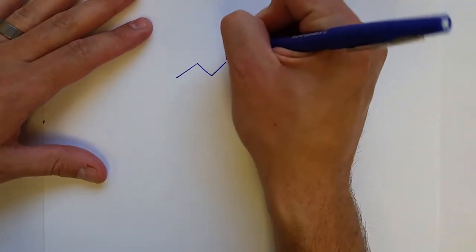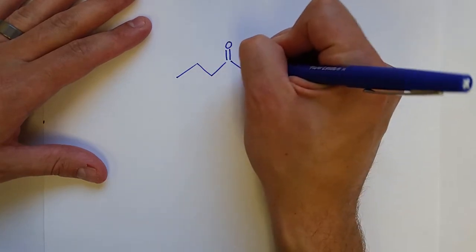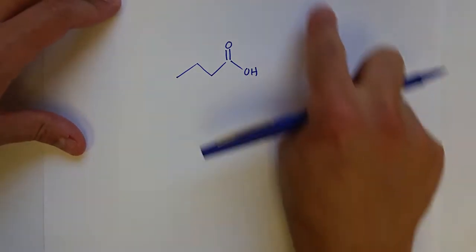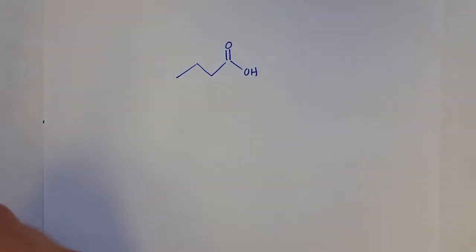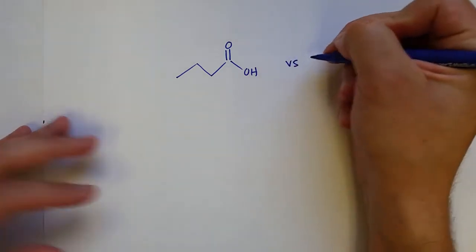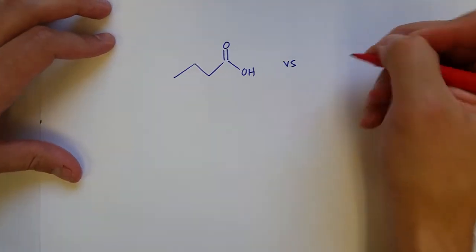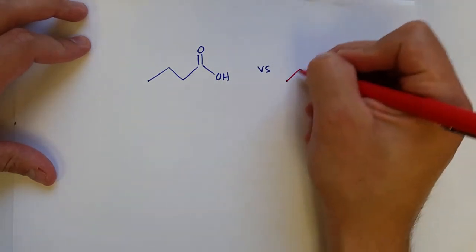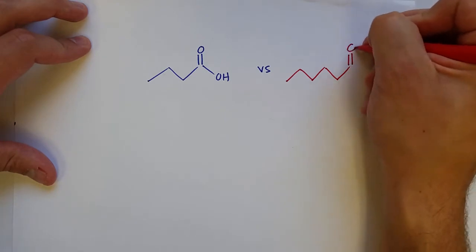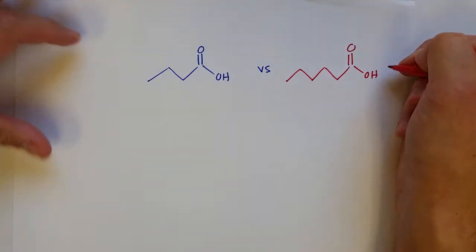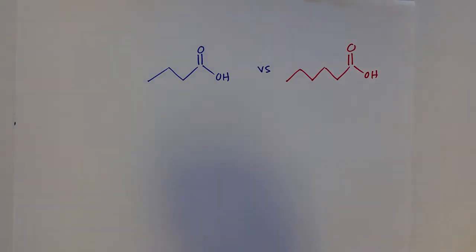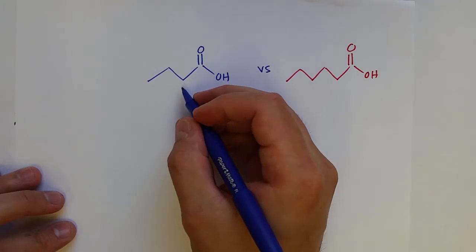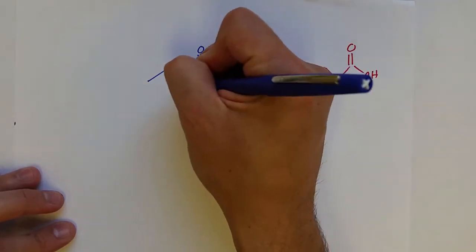Let's talk about other functional groups — the same story holds true. Consider a carboxylic acid: butanoic acid versus hexanoic acid. Butanoic acid, because it has the smaller nonpolar region, would have a higher solubility in water. The additional oxygen also helps polarity when compared to its alcohol counterpart.